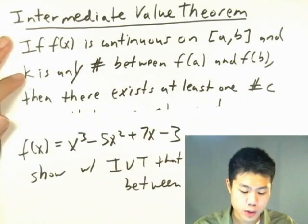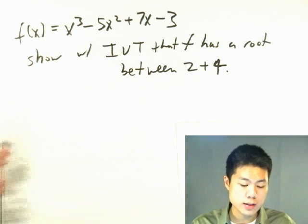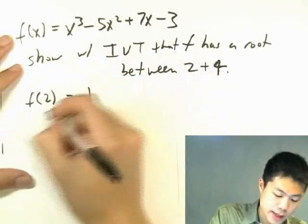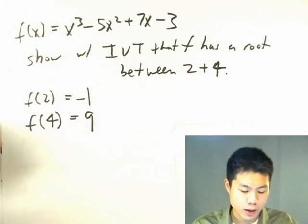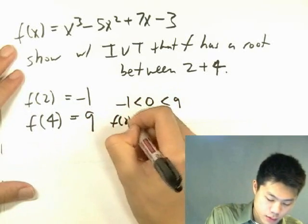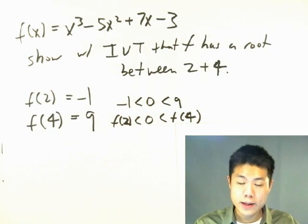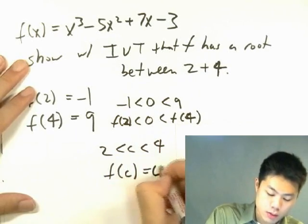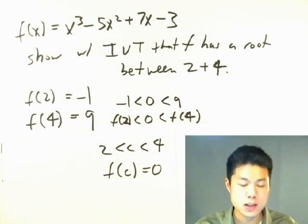k is any value between f(2) and f(4). We want to find a root, and roots occur when y = 0, so our k value is going to be 0. First we find f(2), which equals -1. And f(4) is going to equal 9. Is zero between f(2) and f(4)? Yes — zero is between -1 and 9. So zero is between f(2) and f(4). Therefore, there will be a value c between 2 and 4 such that f(c) = 0.